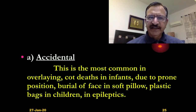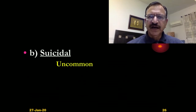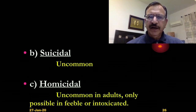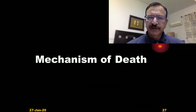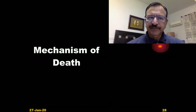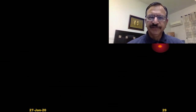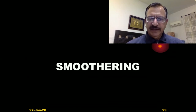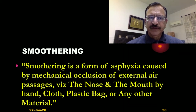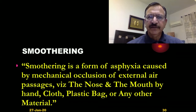Usually it is accidental. Suicidal is uncommon. Homicidal is uncommon in adults — only possible in feeble and intoxicated persons. The mechanism of death is either hypoxic hypoxia or anoxic anoxia. Smothering is a form of asphyxia caused by mechanical occlusion of external respiratory passages like nose and mouth by means of hands, cloth, plastic bag, or any other material.